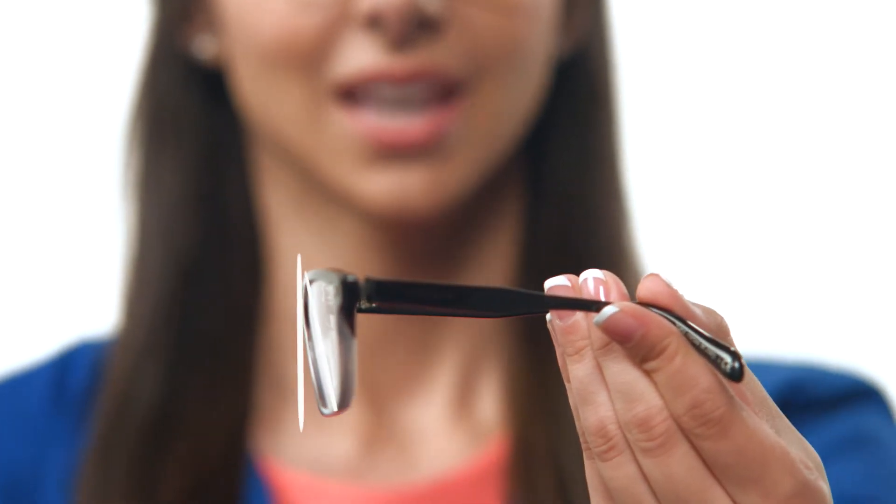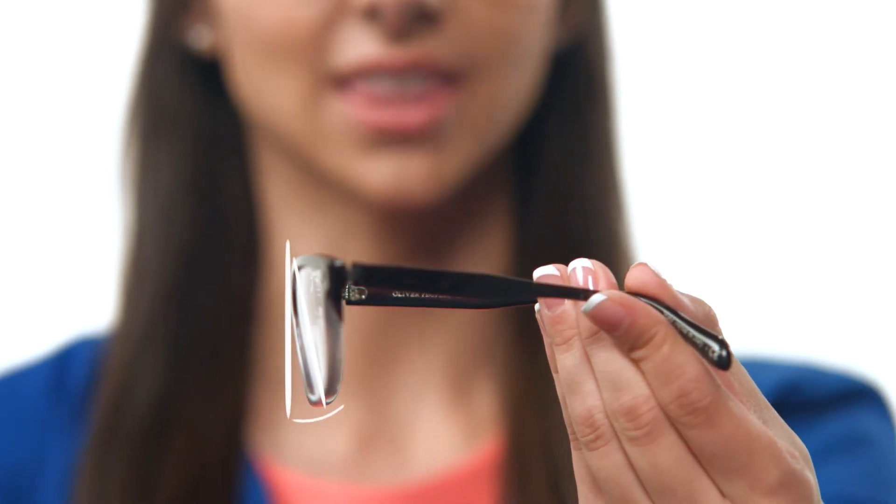One of these measurements is the frame's panoscopic tilt. Panoscopic tilt is a big term, but it's really very simple. It refers to the vertical angle of the lens in the frame.